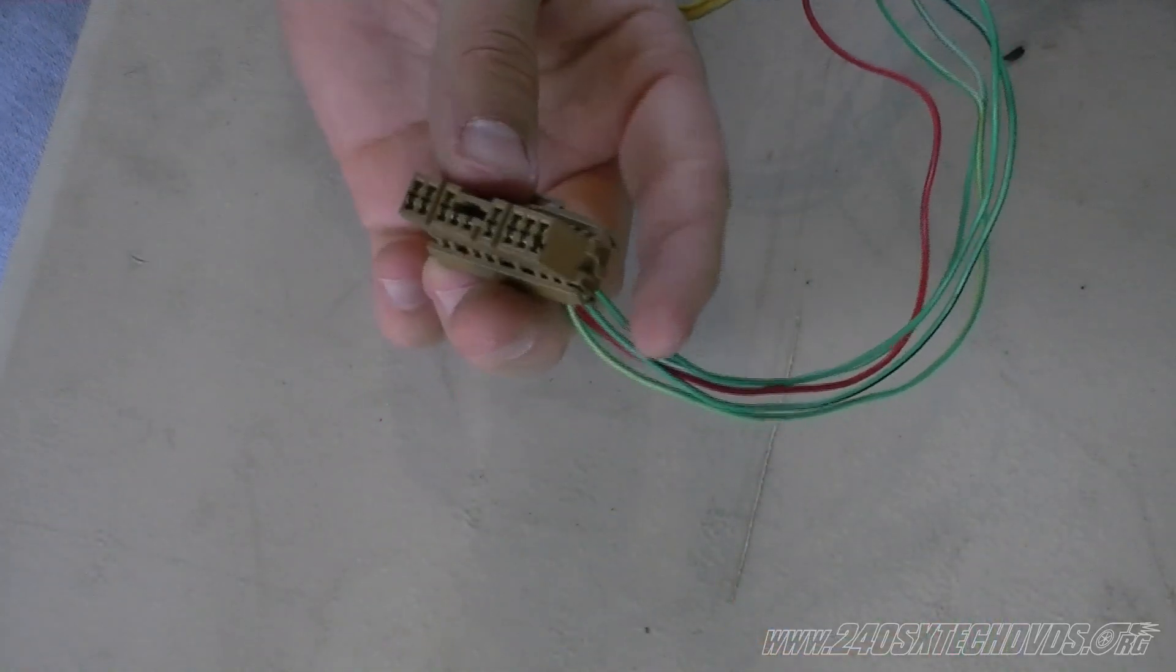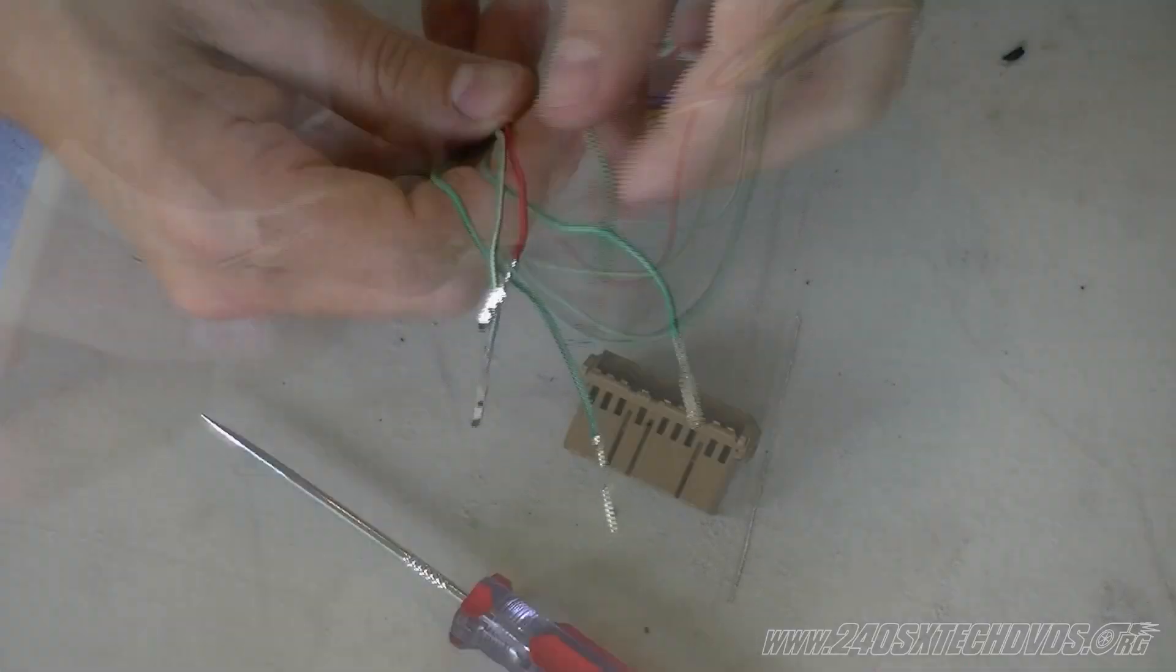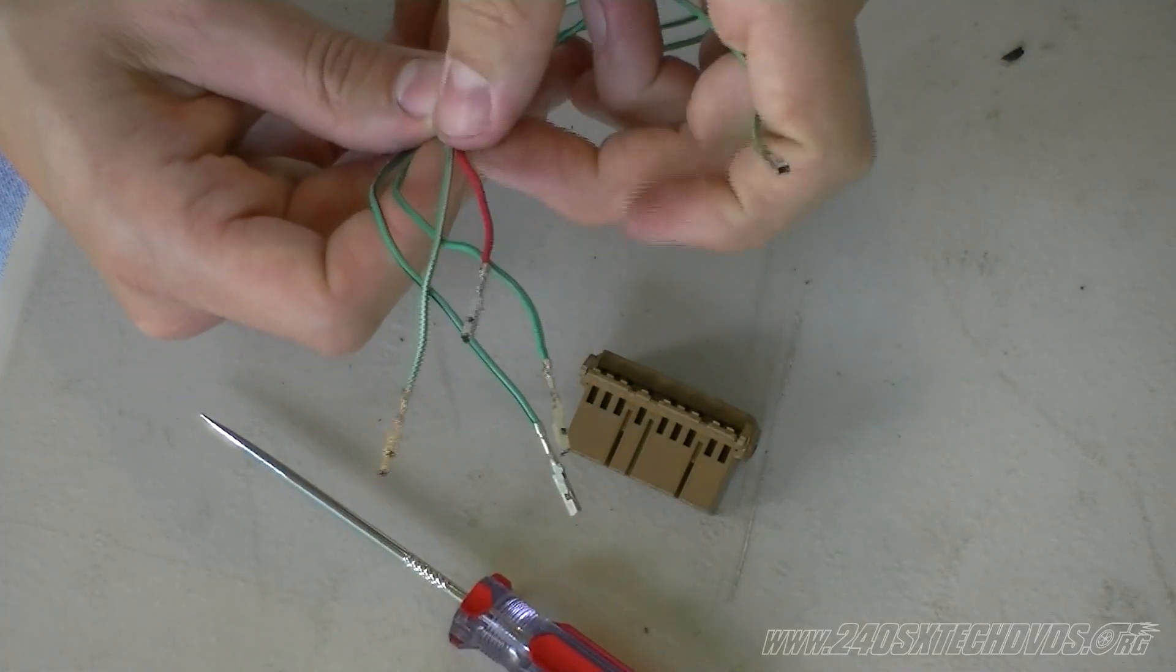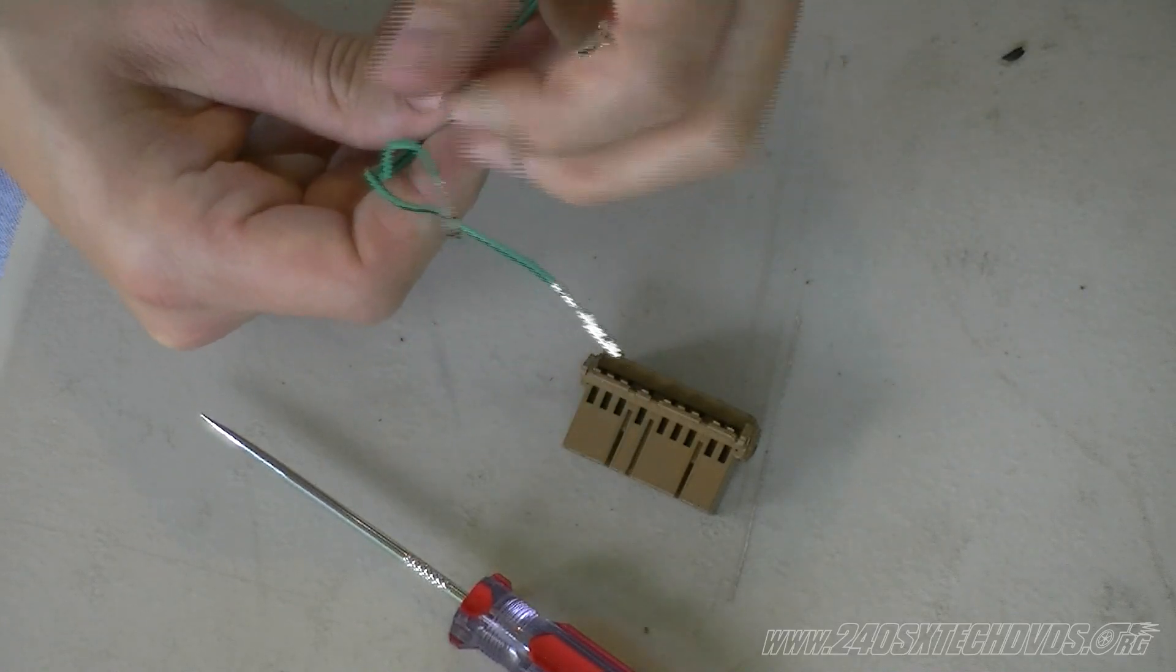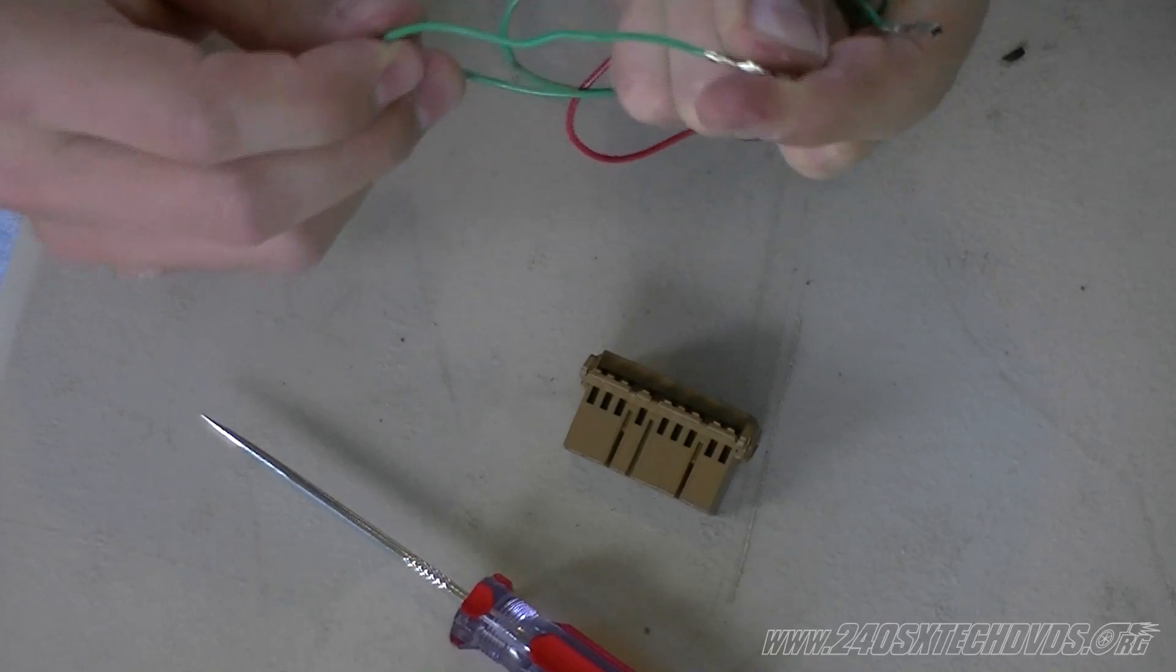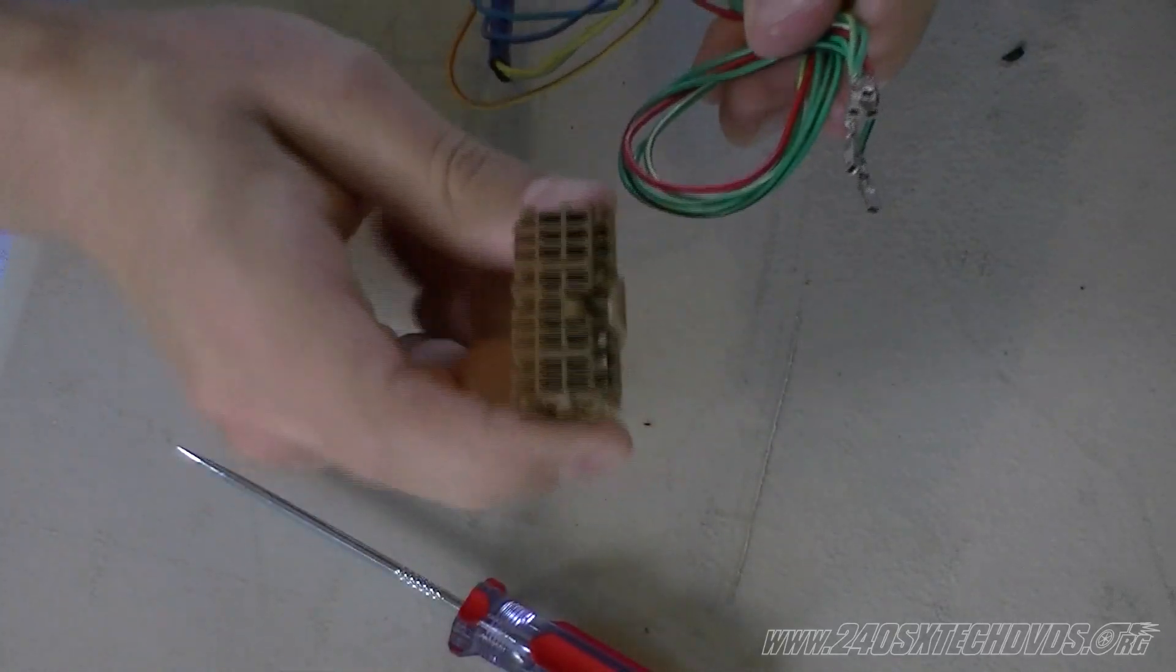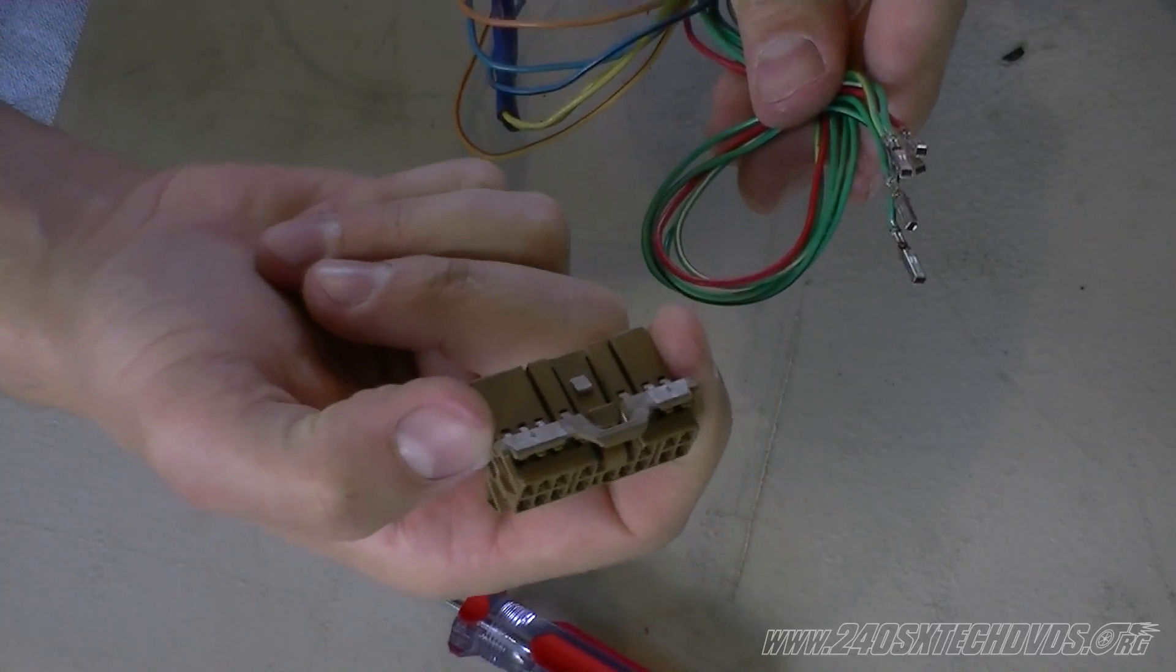We'll also go ahead and de-pin the dual overhead cam connector. Basically all the colors I just removed is green with yellow stripe, red, green with a white stripe, green with a black stripe, and green. You could easily just cut off the plug and left them connected to the plug, but I'm removing this plug because I will use it on another K harness that is damaged.